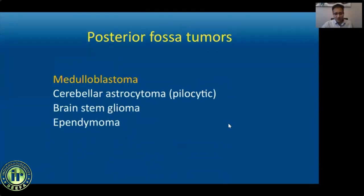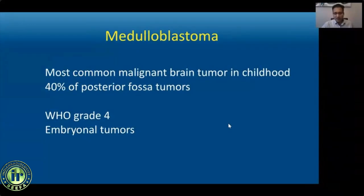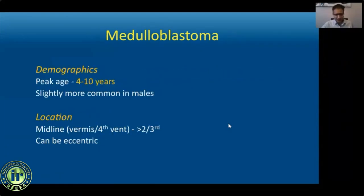Medulloblastoma is the most common malignant brain tumor of childhood and the most common posterior fossa tumor, accounting for about 40 percent of posterior fossa cases. It is a poorly differentiated WHO grade 4 tumor belonging to the category of embryonal tumors. The peak age is 4 to 10 years, although it can be seen from infancy through childhood. About two-thirds are located in the midline involving the fourth ventricle, centered more towards the roof near the vermis.